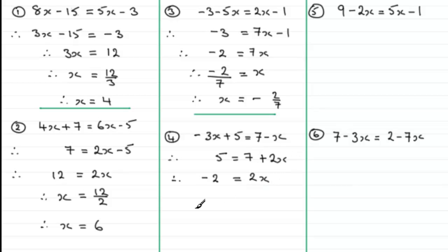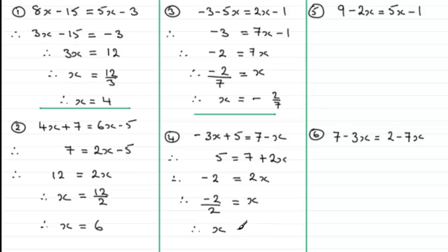Next I divide both sides by 2: minus 2 divided by 2 equals x, which gives negative 1. Writing x on the left-hand side — always finish with x on the left — x = −1.